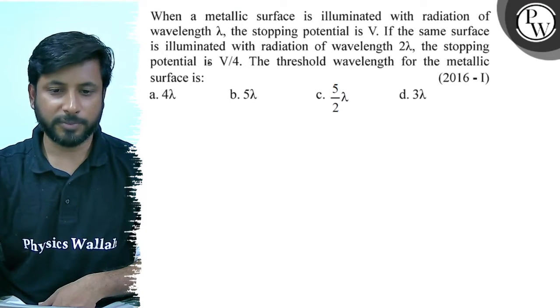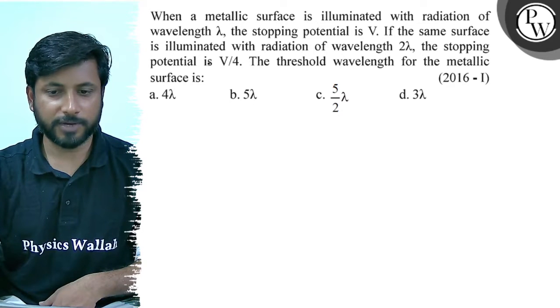The threshold wavelength for the metallic surface is: option A, 4 lambda; option B, 5 lambda; option C, 5 by 2 lambda; option D, 3 lambda.